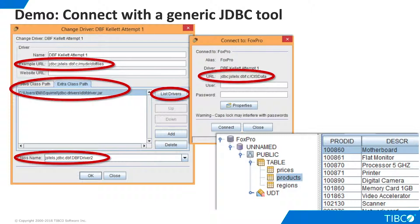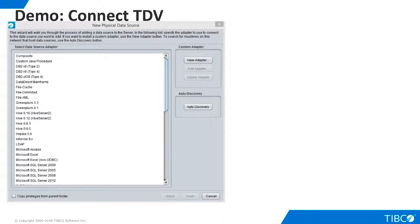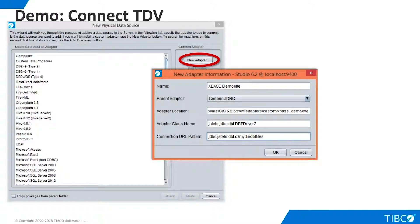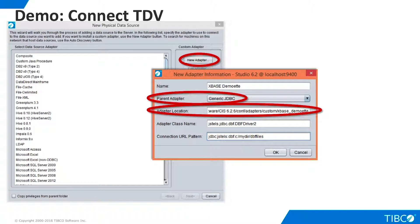We are ready to create our new TDV adapter. We click New Adapter. Here is the dialog that will help us define the new adapter. We can give the adapter any name we like. We use generic JDBC as the parent adapter. Our new adapter will inherit its capabilities from this generic JDBC adapter. TDV defines the directory for our new adapter automatically, and there is usually no need to change it. Our new adapter will live in the TDV installation directory under Conf Adapters Custom, and the final directory in the path will be the name that we gave to the adapter, XBase Demoet.